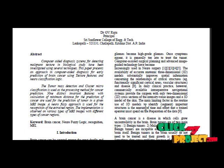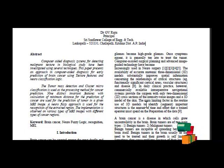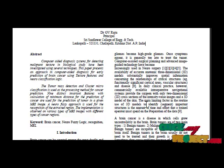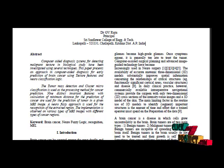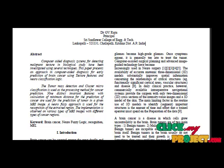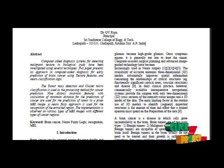The MRI images are first pre-processed to remove noises from them. Histogram equalization is done to equalize the contrast of the image. Then images are enhanced using a sharpening filter. Then using greyscale thresholding, the images are segmented.